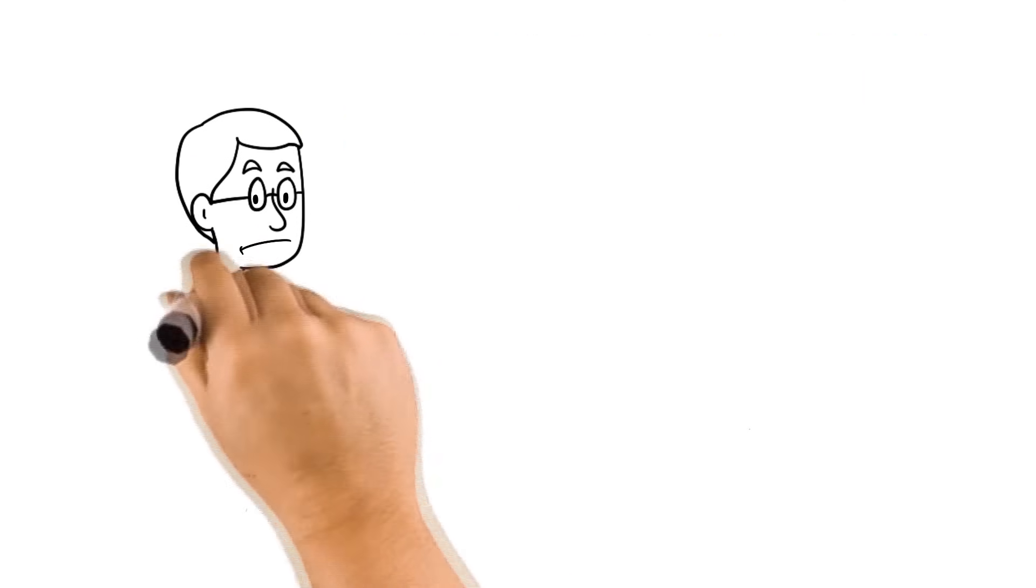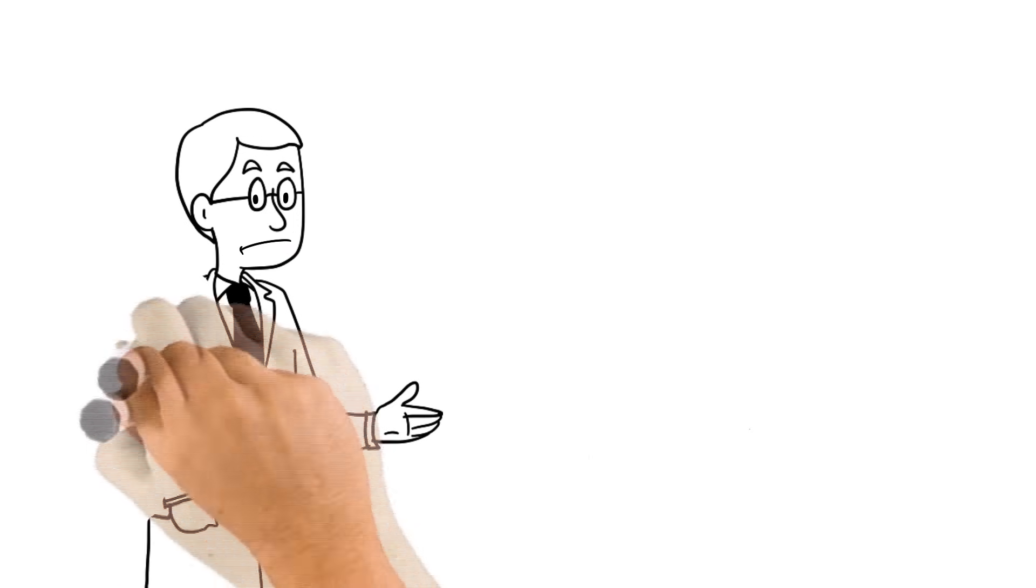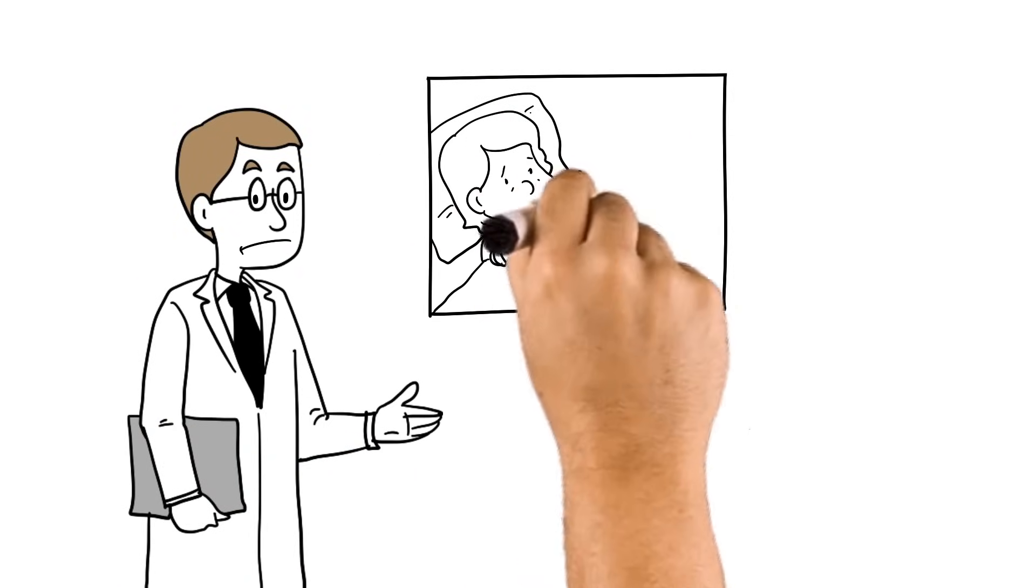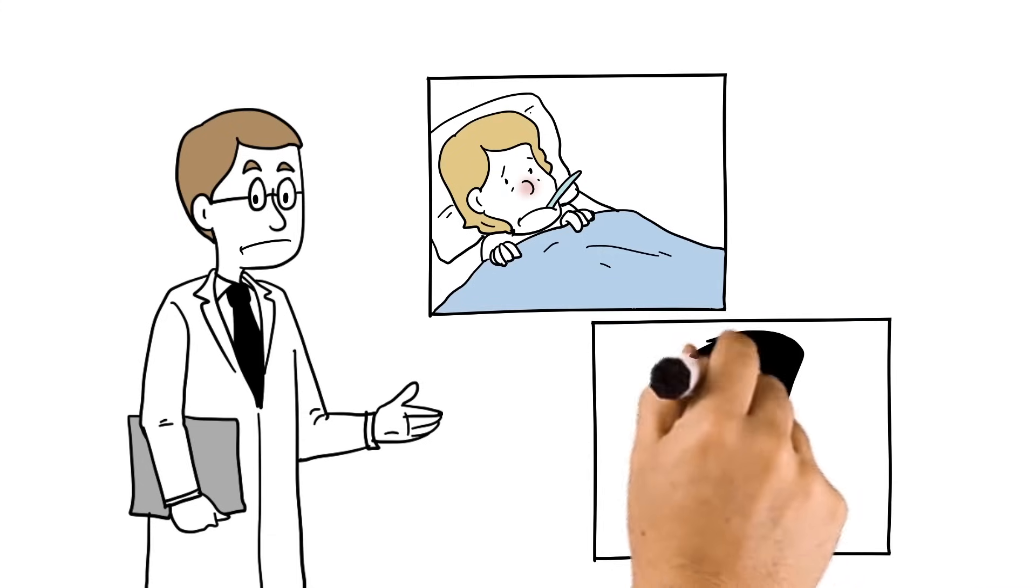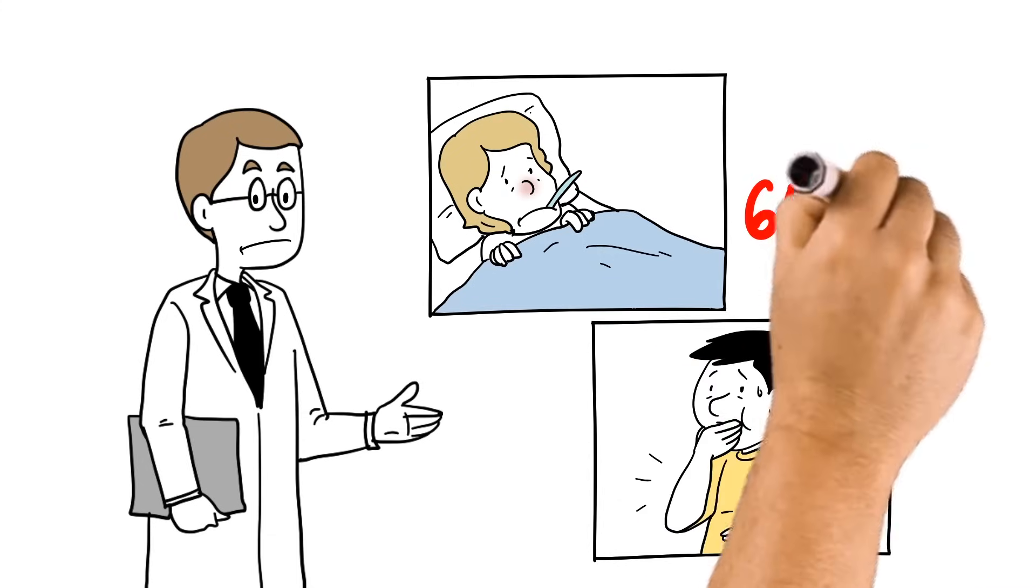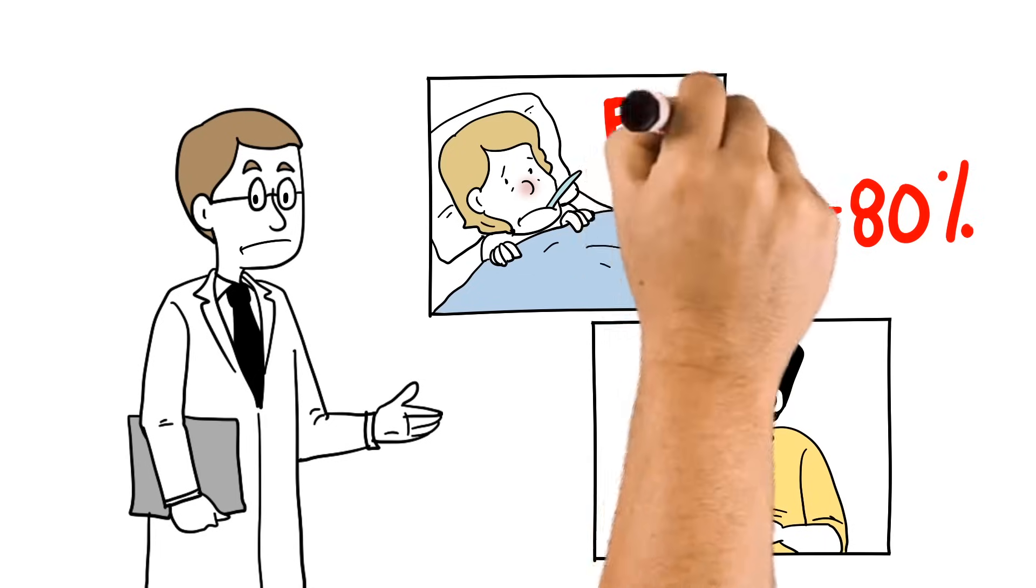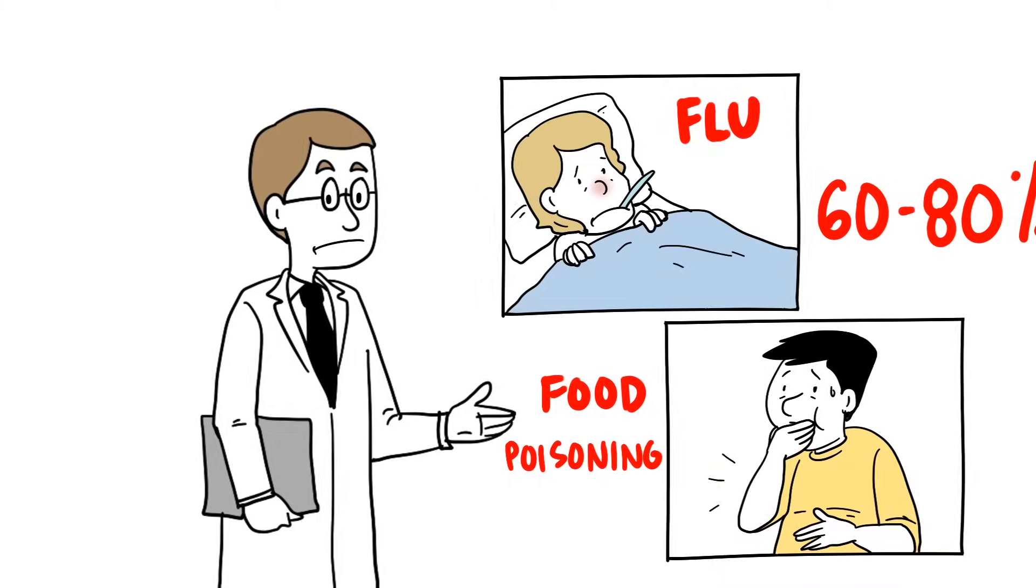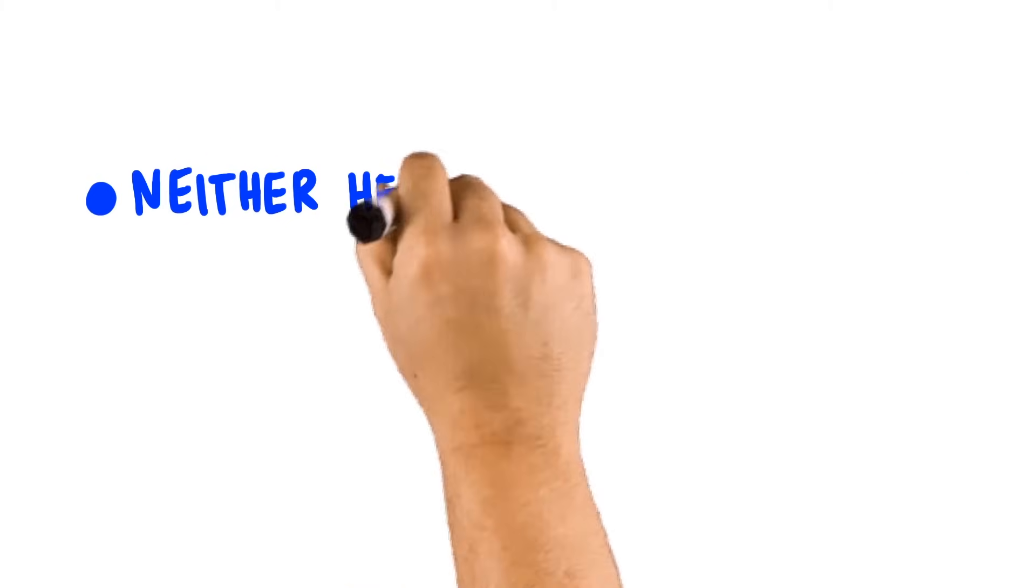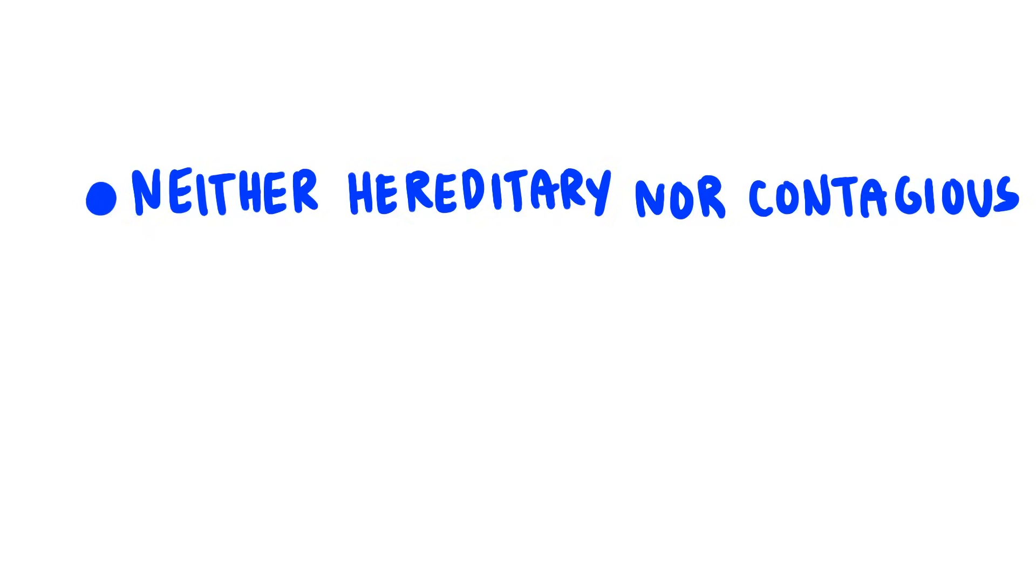You might be wondering how you got GBS in the first place. The truth is, doctors aren't 100% sure what causes GBS. But we do know that 60 to 80% of cases are preceded by some sort of bacterial or viral infection like the flu or food poisoning. Because of how GBS works, it isn't hereditary or contagious, so you don't need to worry about passing it on to your friends and family.